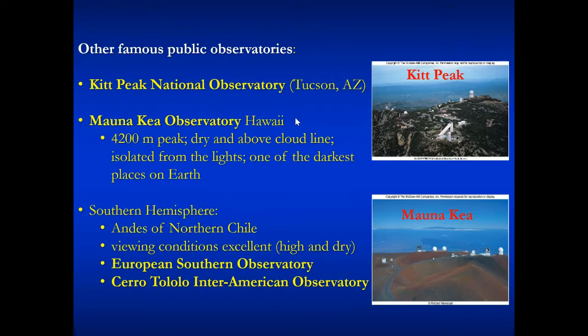It's above the cloud line. So it's high and dry and it's isolated from the lights because it's one of the darkest places on Earth because it's in the middle of the Pacific Ocean. So it's a very good observatory. And then if you want to observe things in the southern hemisphere that you can't see from the north, you would go to the northern mountains of Chile and they're high in the Andes in the desert mountains. You can get some really good images. The European Southern Observatory is there and there's another Inter-American Observatory there.